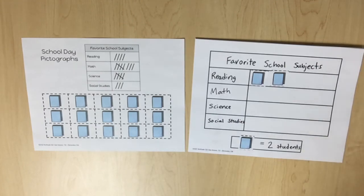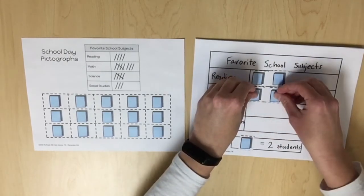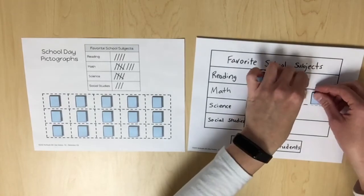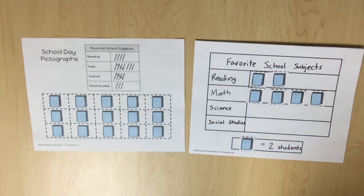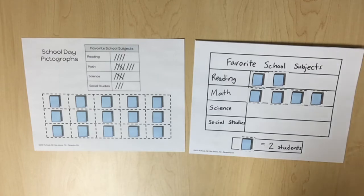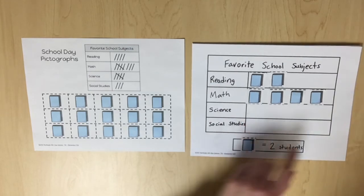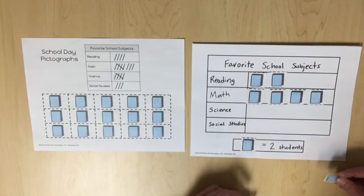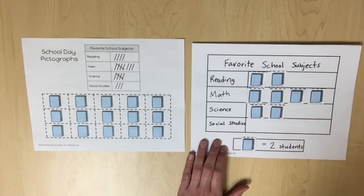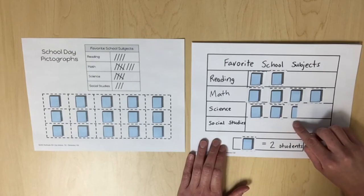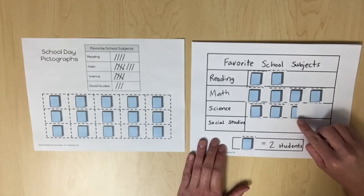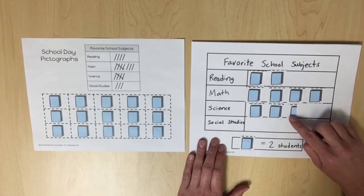Repeat the process to represent the 8 students who chose math — skip counting 2, 4, 6, 8. There were 5 students who chose science. Students should notice that it is not possible to represent 5 students with 2 or 3 whole book symbols. Explain that because a book symbol represents 2 students, the symbol can be cut in half to represent only 1 student. To represent science, skip count 2, 4, and then use half a symbol for the 5th student — half a book represents 1 student instead of 2.